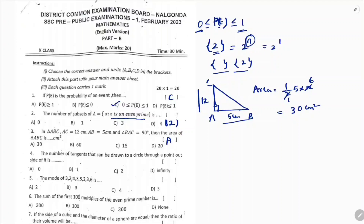Next question: the number of tangents that can be drawn to a circle through a point outside it. From a point outside a circle, we can draw two tangents. So the number of tangents is 2 and the correct option is C.